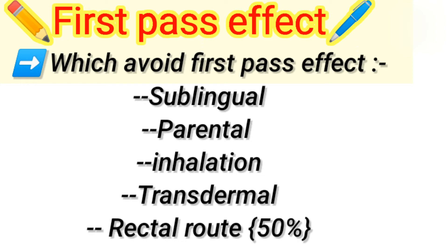The routes which avoid the first pass effect are: sublingual, parenteral, inhalation, transdermal, and rectal. The rectal route avoids the first pass effect to some extent. When drugs are administered through these routes, they do not undergo first pass effect, so drug concentration is not reduced. Therefore, dose adjustment would be necessary as bioavailability would be higher.